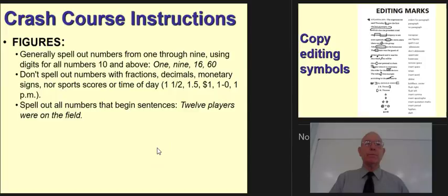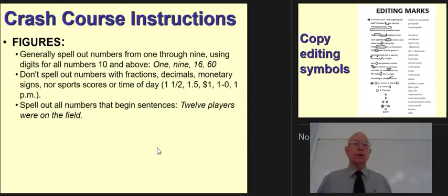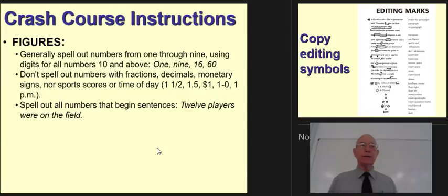Figures or numbers: generally spell out numbers from one through nine, and use digits for all numbers 10 and above. That's the general rule. So one through nine are spelled out, whereas 16, 60, 1,000 — anything 10 or above, any double-digit number, you use figures.